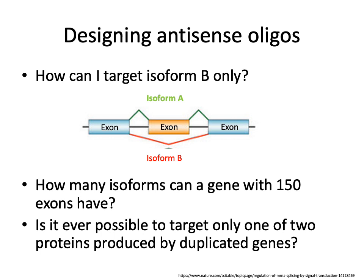A typical question in this case is: how do I target isoform B? Related questions to consider are: if you have a gene with, say, 150 exons, how many potential isoforms could be produced? Also, is it ever really possible to specifically target one gene out of a family of two homologous proteins that are recent duplicates and therefore have high sequence similarity? These are important design considerations we need to think about.